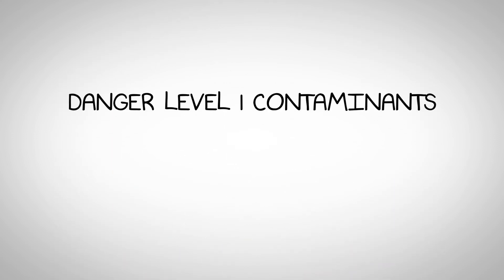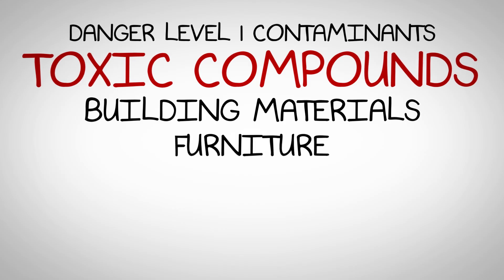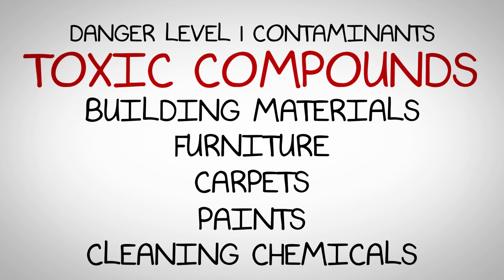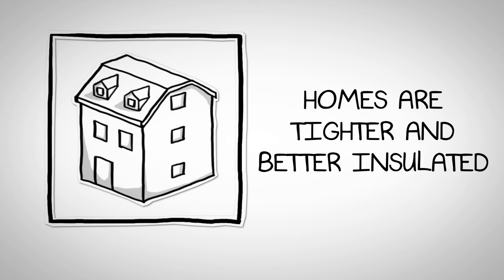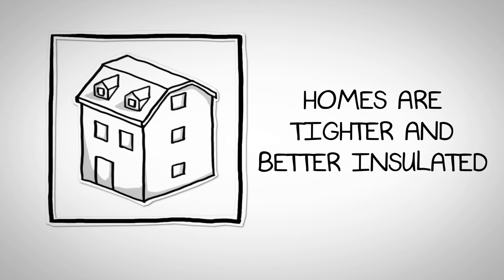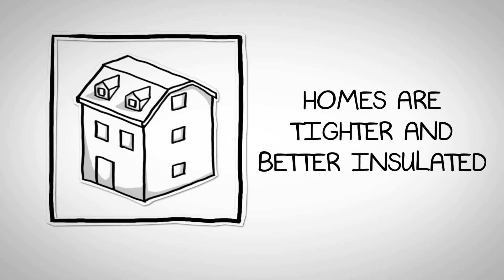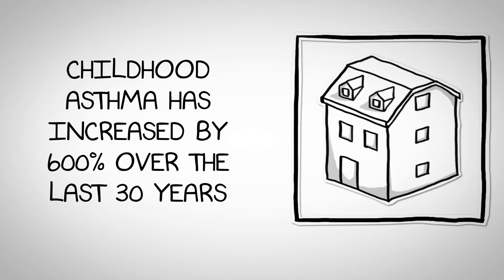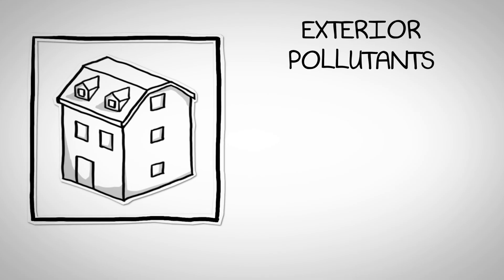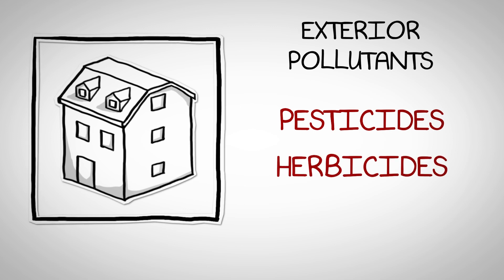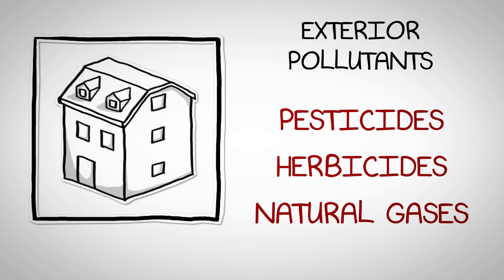Danger level 1 contaminants are toxic compounds. Building materials, furniture, carpets, paints, and cleaning chemicals can produce a toxic environment in your home that may cause an allergic reaction. Homes are being constructed and re-insulated to be tighter and more energy efficient, which may trap these toxic chemicals in our home. It's no wonder childhood asthma has increased 600% in the last 30 years. These are indoor toxins, and also exterior pollutants — pesticides, herbicides, and even natural gases like methane — which can migrate into a house from the soil.